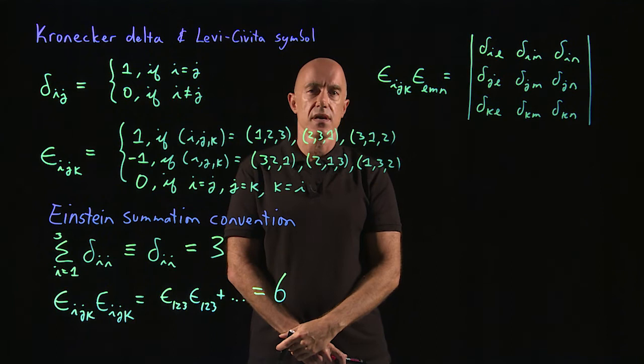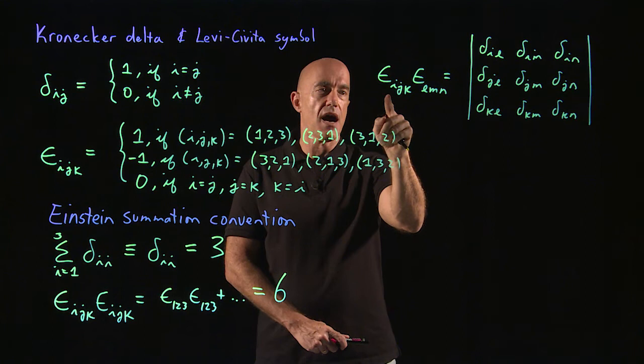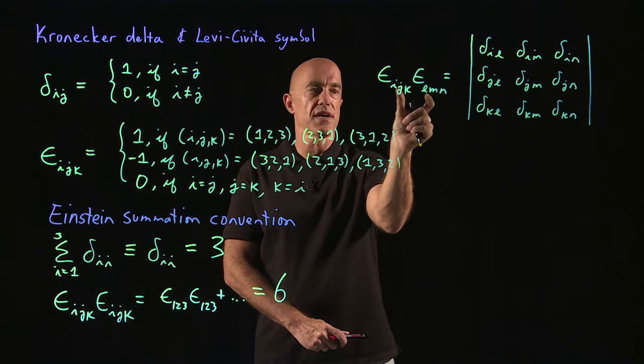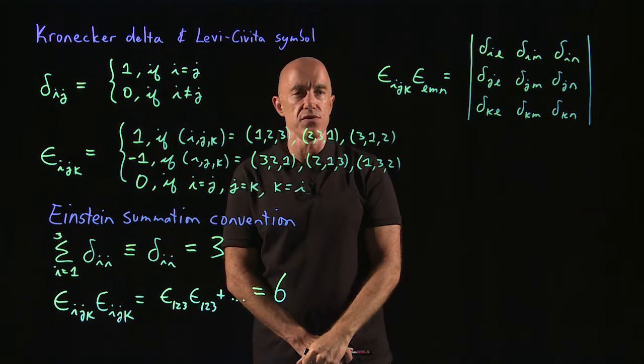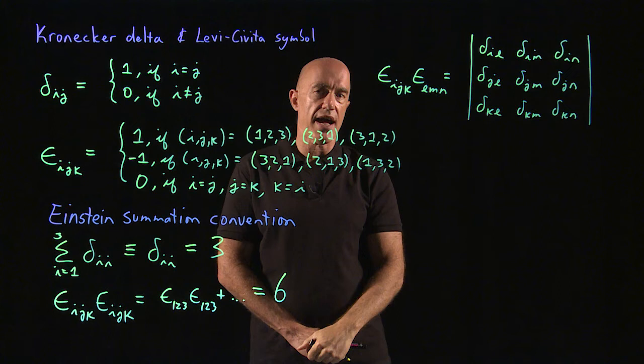What I do ask you to prove is how does this identity collapse when we sum over some of these indices. So what would epsilon i,j,k epsilon i,m,n equal? So we sum over the first index. That one, that expression is going to be used by me in the next lecture. So I hope you will look at the problems and figure out these identities when you contract the index.